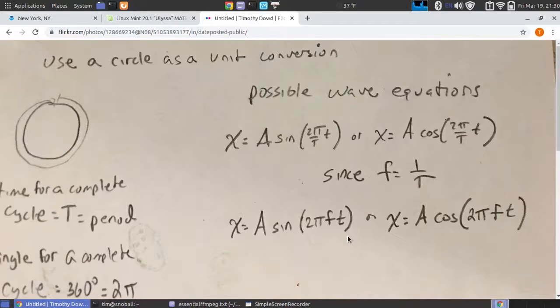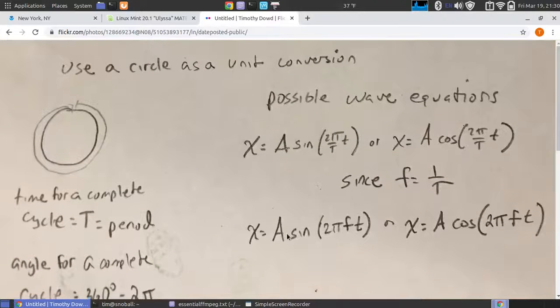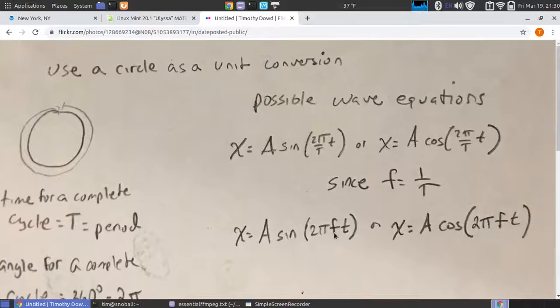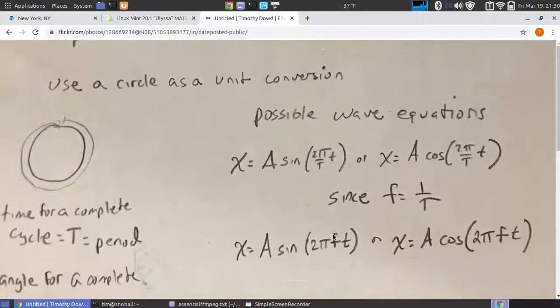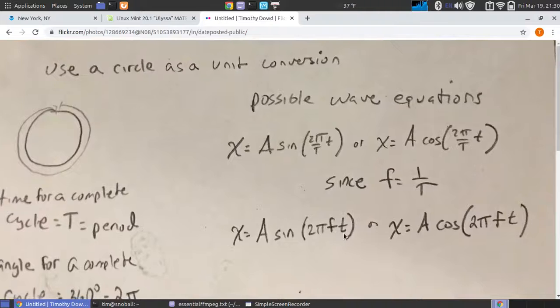They're both describing waves of the same shape and periodicity. The vertical axis should match the amplitude on the graph, and whether they're using period or frequency, it's contained inside the trig function along with time.